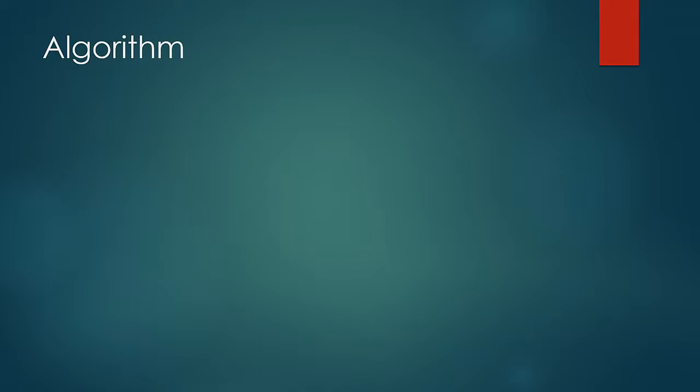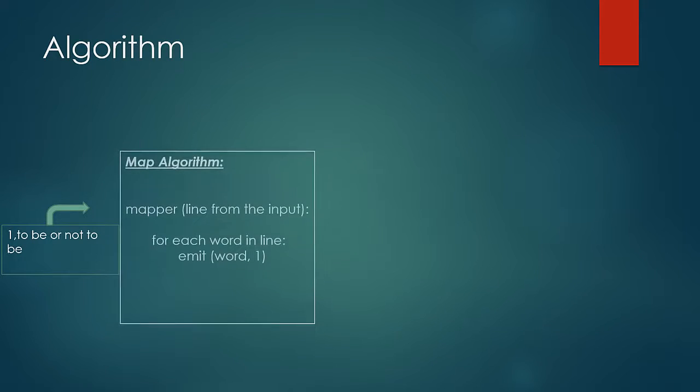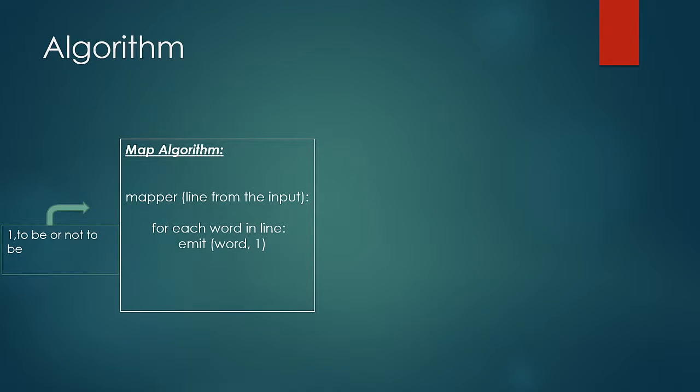So our map would receive the input record 1 comma to be or not to be. Here 1 signifies the byte offset which is supplied by Hadoop. So what our map algorithm would do is that it would tokenize the input line into words and for every word emit word comma 1 as a key value pair.